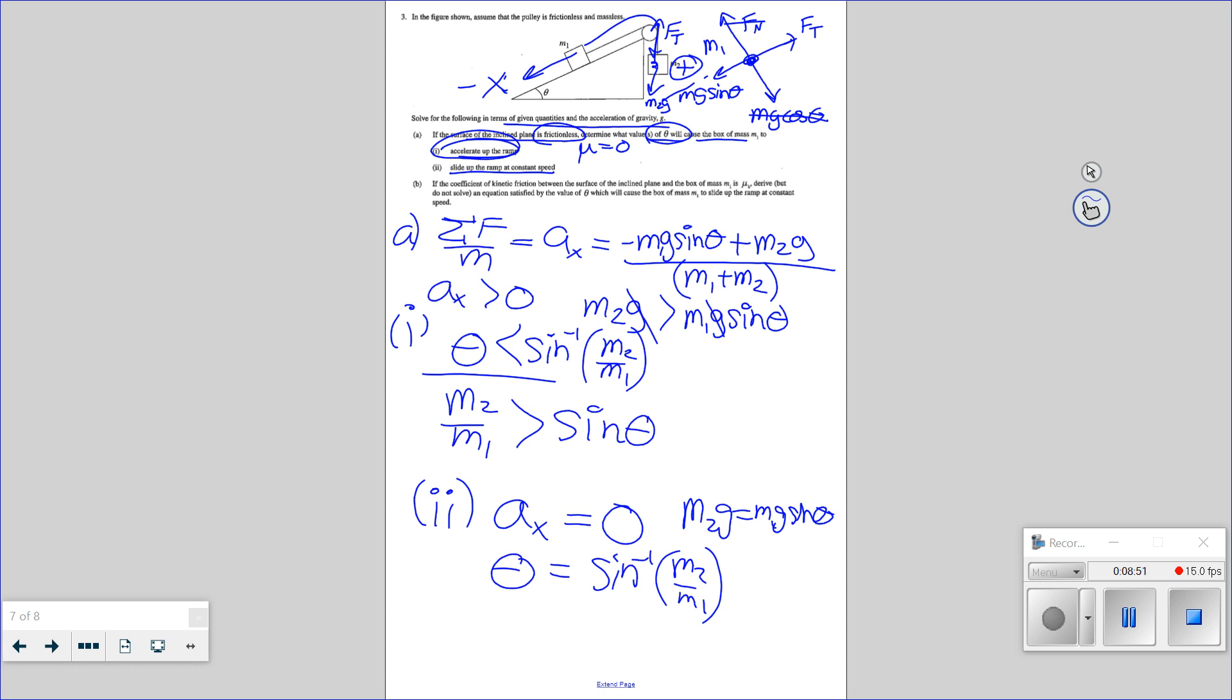And then, if the coefficient of kinetic friction in the box is mu k, derive but do not solve an equation, satisfied by the value of theta, which will cause the box to slide up at constant speed. Wait, what? Derive an equation satisfied by the value of theta, which will cause the box. So now I do have friction, and I want to solve for theta again? Yes. That is what those words mean. Craziness.